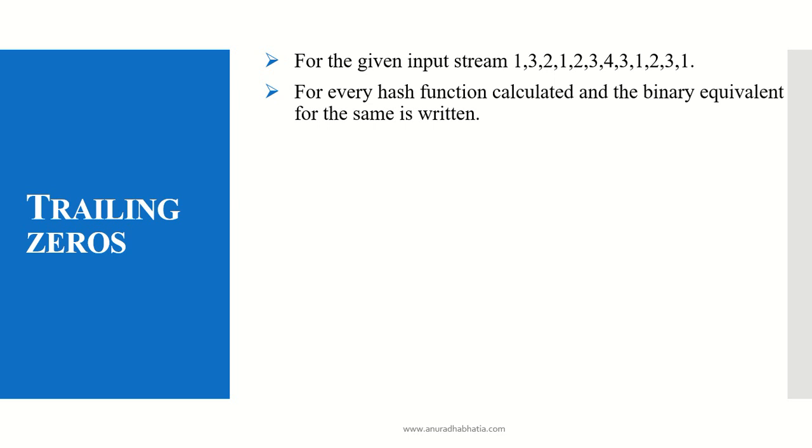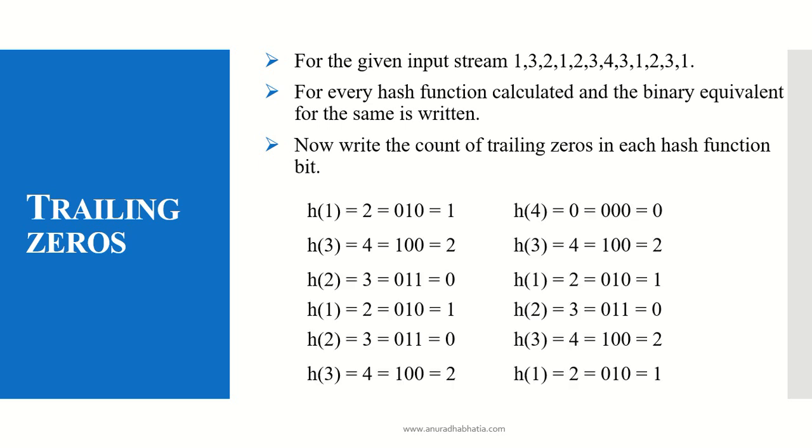Now the next is to find out the trailing zeros. For every hash function calculated, I found the binary equivalent. Now with every binary equivalent, I have to find out how many trailing zeros there are - the zeros present in the last bit. If you see in this case, it is 1. And for h(3) = 4, then I have 2 trailing numbers at 2 places, so my trailing zeros is numbered as 2.